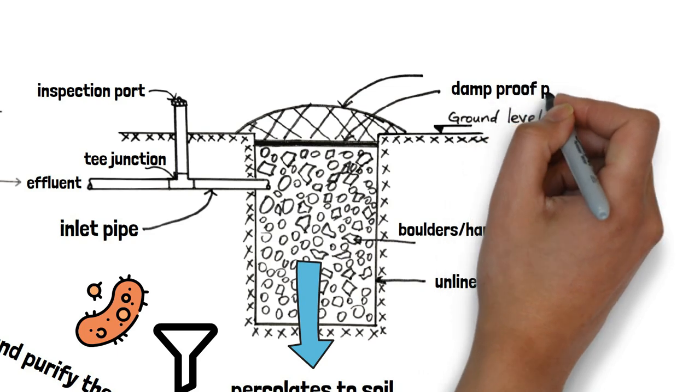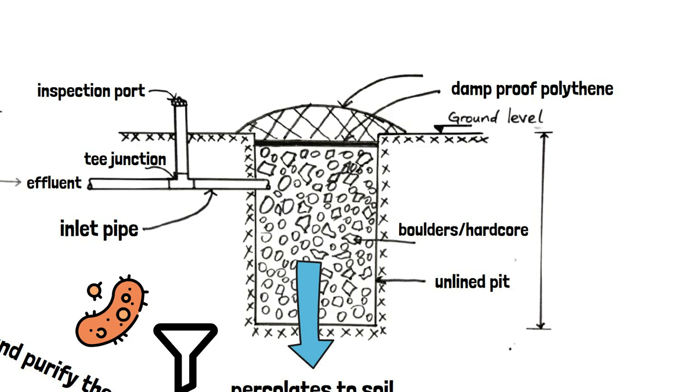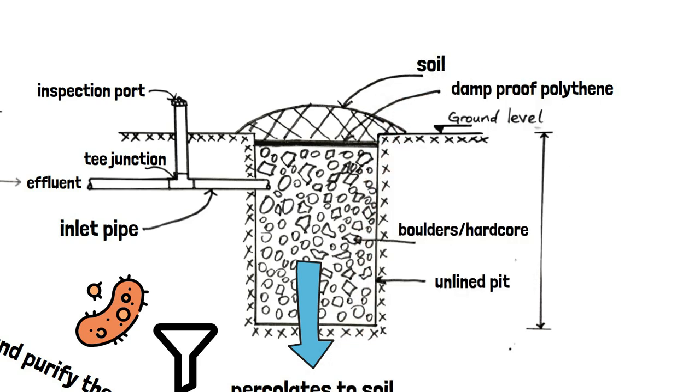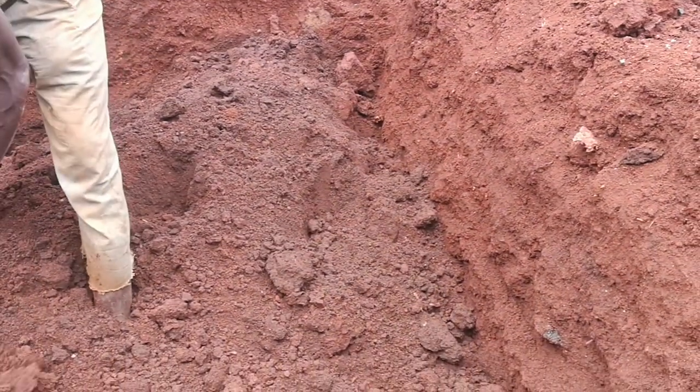After filling the pit with hard core, a damp-proof polythene layer is placed. This prevents rainwater from seeping into the soak pit. Afterwards, a layer of soil is backfilled to completely cover the soak pit. The soil is then compacted to ground level.